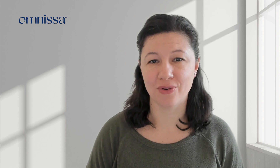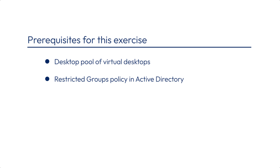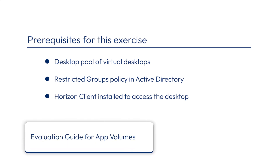Before moving on with this exercise, make sure you have already completed the exercise in our previous video called Creating an Application Package with AppVolumes 4. To assign an application package with AppVolumes, you'll need to log in to Virtual Desktop. Therefore, you'll need to have a desktop pool of virtual desktops, use the restricted groups policy in Active Directory to add users to the local remote desktop users group of the virtual desktops in the pool, and also have a Horizon client installed to access the desktop. For details, refer to the Evaluation Guide for AppVolumes.